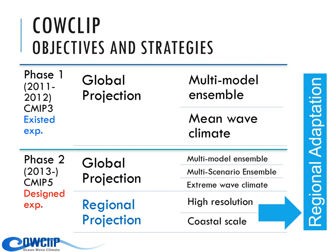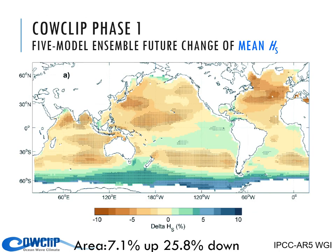In phase one, COWCLIP was launched in 2011. We ran five different wave climate model projections and made an ensemble to estimate mean wave climate. After that, we designed a more comprehensive wave climate projection, increasing the model scenarios, and also expanded the target to extreme wave climate. We also started to make downscaling of the wave climate projection to increase resolution along the coast. This is one of the typical figures from COWCLIP phase one, which was implemented in IPCC AR5 in 2012.